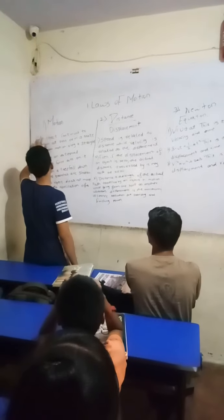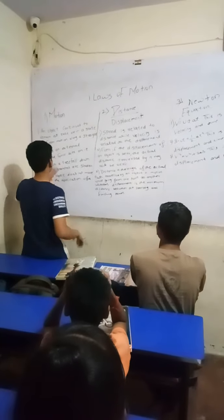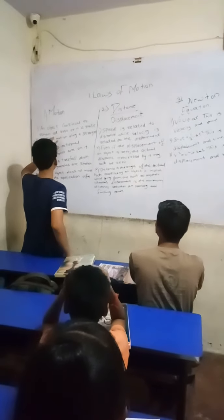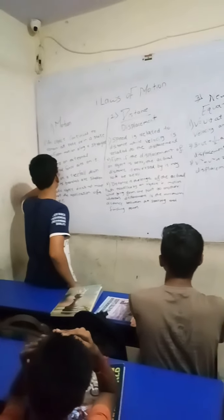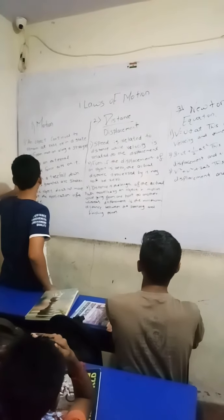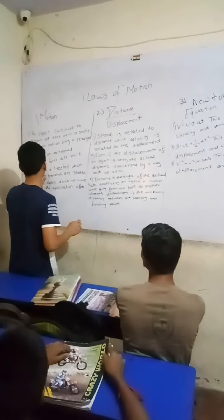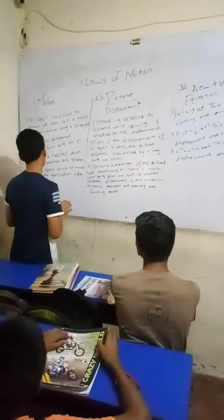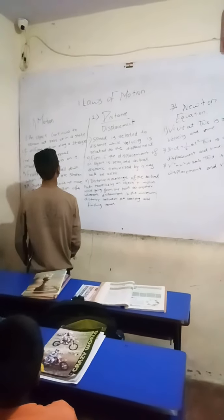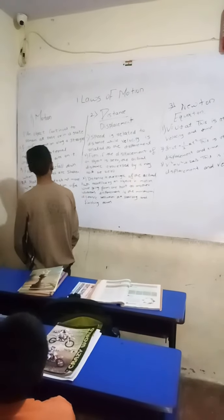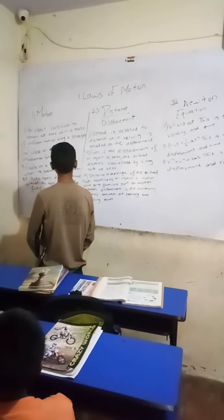Motion. An object continues to remain at rest or in a state of uniform motion along a straight line unless an external unbalanced force acts on it.